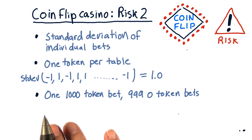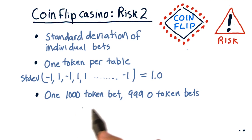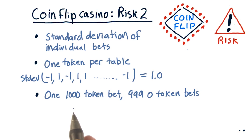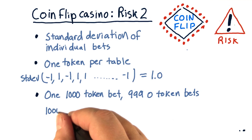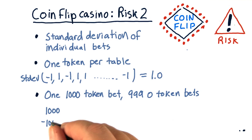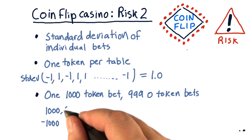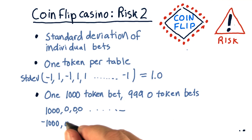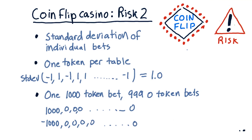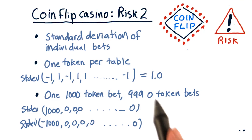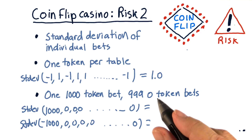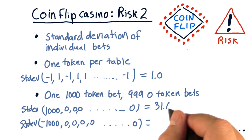The outcome for the second scenario, where we make 1 bet with 1,000 tokens and then essentially 0 bets on the other tables, turns out a little bit differently. So on this first table where we bet 1,000 tokens, we either win 1,000 or we lose 1,000. And on all the other tables, the outcome is exactly 0. Same for this case where we lost on that first one. So again, we bet on one table 1,000 tokens, and we bet 0 tokens on the other 999. Reasoning it out this way enables us to calculate the standard deviation. Whichever way it goes, whether we win or lose, the standard deviation on this event is the same, and the answer is 31.62.